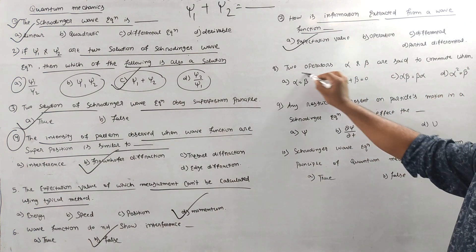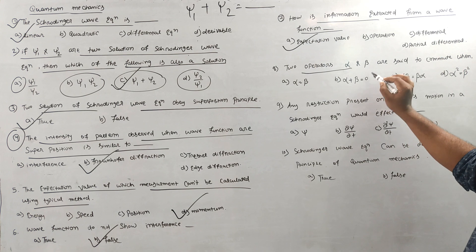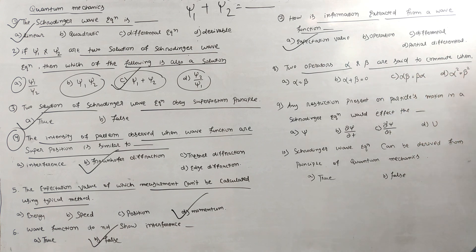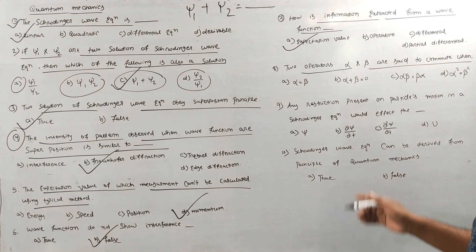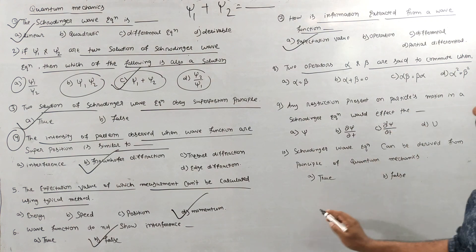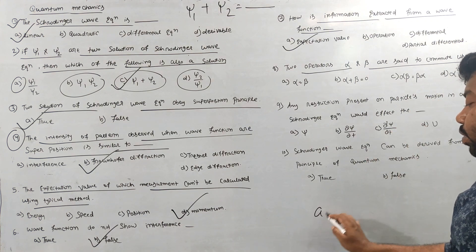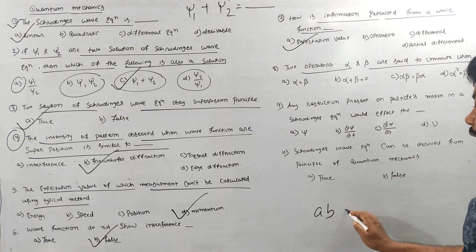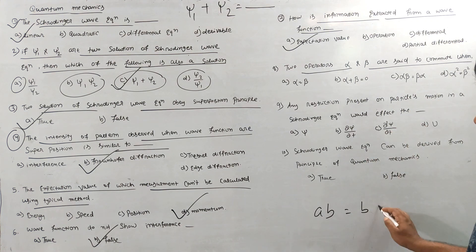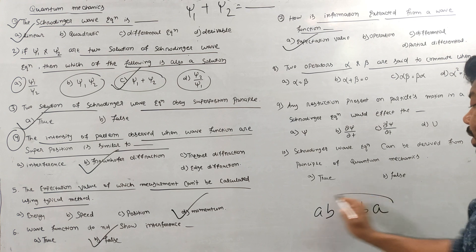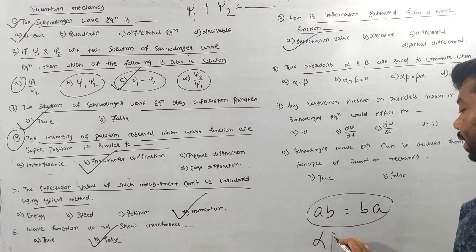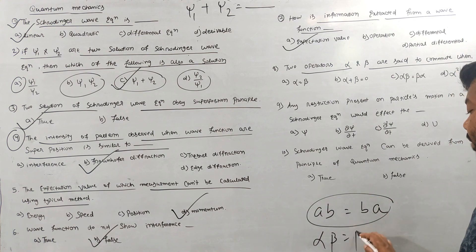Two operators alpha and beta are said to be commuting operators. How does the commutative property satisfy? The commutative property is: AB equals BA. That is the answer.